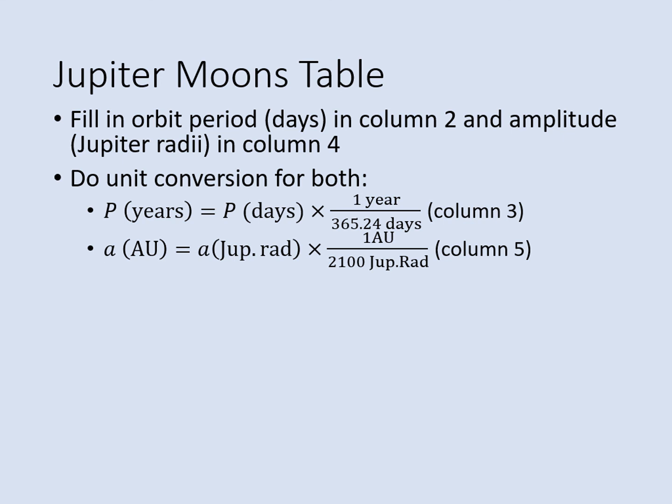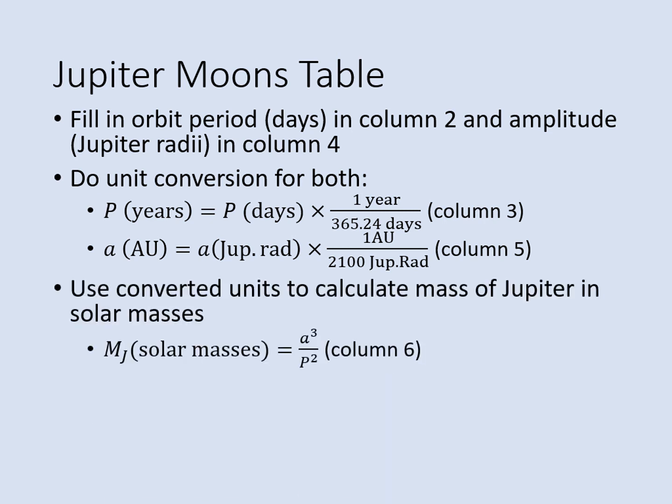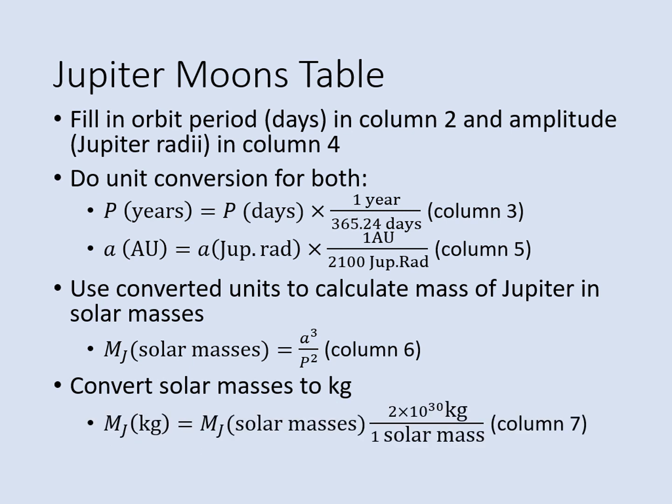The reason for doing these unit conversions is it lets us simplify Newton's version of Kepler's third law — the formula that lets us find the mass of Jupiter. In the online lectures, you'll see this formula with the gravitational constant and a few other numbers thrown in, but in the units we're using here, we can eliminate those extra bits and just use the numbers we calculated. Make sure you use the values from the unit conversions in columns three and five when you do this calculation. This gives you the mass of Jupiter in solar masses — effectively the fraction of the Sun's mass that Jupiter represents. We know Jupiter orbits the Sun and not the other way around, so this value should be less than one. To get this number into kilograms, multiply by the mass of the Sun and put that answer into column seven.